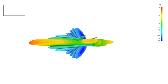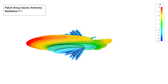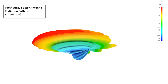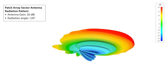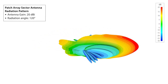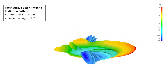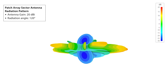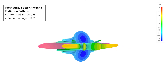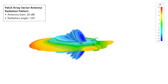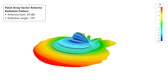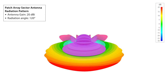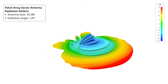Let's look at traditional radiation patterns for high gain patch array sector antennas in a 3D view. What you'll notice is there are three typical parts of this pattern: you have your main lobe, where your ideal connectivity comes from, and then you have front and back or side lobes.